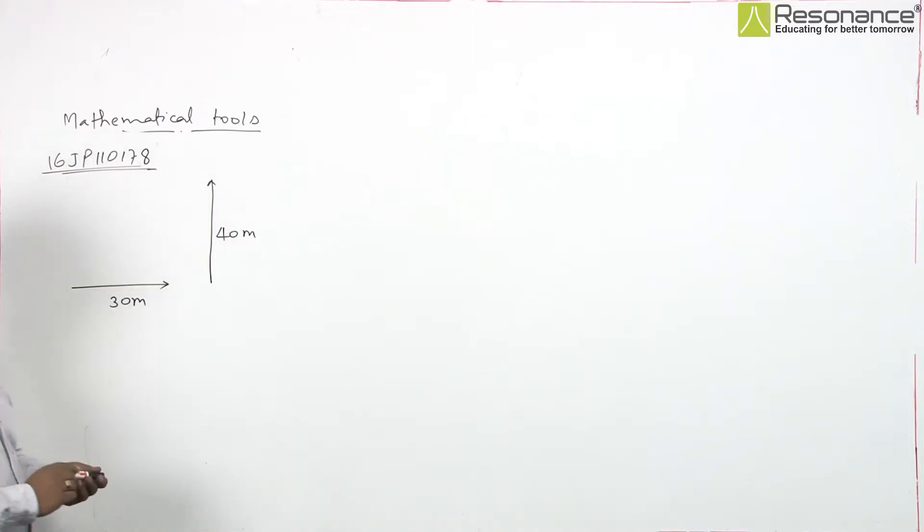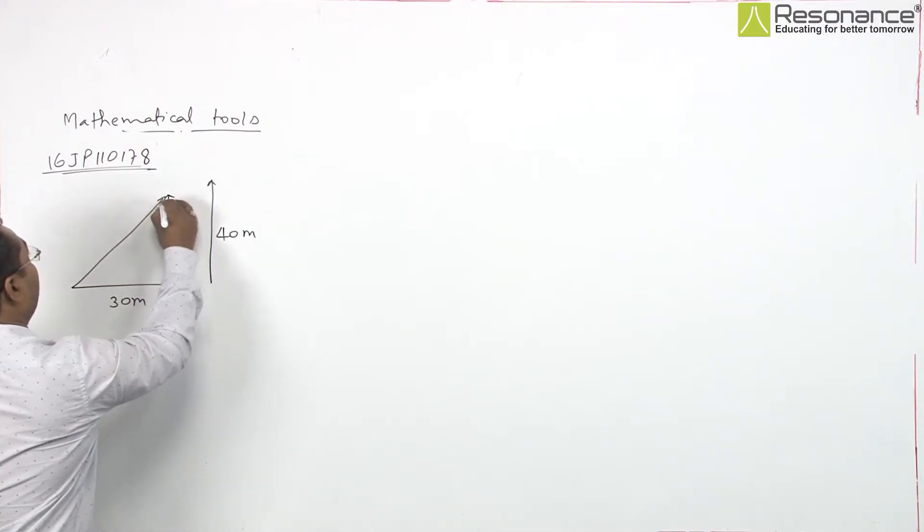So, for adding, what we do? We put the tail of this vector on the head of this vector. So, it will be like this and to add it, we join simply free ends like this.